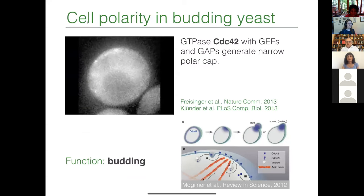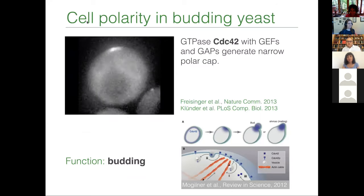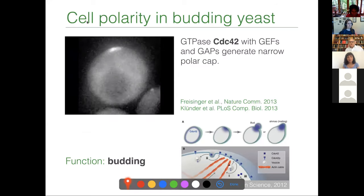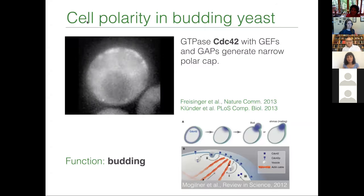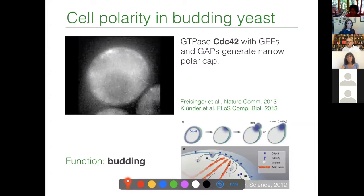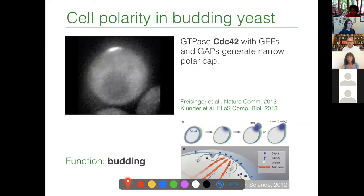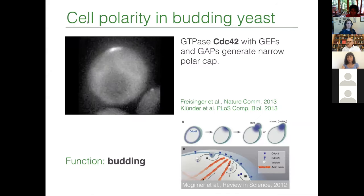That is not the only phenomenon where you have pattern formation — here's another example from budding yeast. Underneath this pattern-forming system, where you have the formation of a polar cap, is not an ATPase like MIN-D, but a GTPase like CDC-42. Similar to the MIN system, this polar pattern serves as a template for the formation of polymer structures — a bundle of F-actin filaments — which then gives rise to budding of that yeast cell. There are quite a few such patterns in bacterial cells as well as in eukaryotic cells.